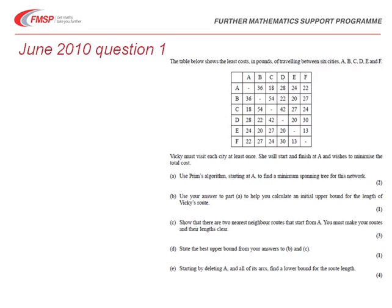Well, we'll now look at those ideas a little bit more closely while we go through an exam question. This one from June 2010 paper. So it tells us that in the table below we've got the least costs in pounds of travelling between cities A, B, C, D, E and F. So that illustrates, doesn't it, the idea that we're not actually necessarily talking about distances. We can be talking about here cost and we're trying to find the least cost. So it says below the table that Vicky must visit each city at least once and she will start and finish at A and wishes to minimise the total cost. We first of all need to use Prim's algorithm starting at A to find a minimum spanning tree. Using the answer to A, calculate an initial upper bound for the length of Vicky's route and then show there are at least two nearest neighbour routes that start from A.